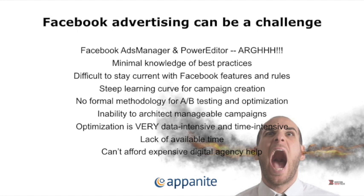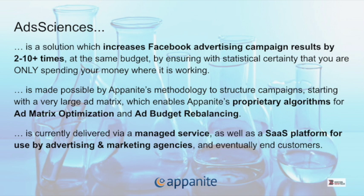In most cases, our approach delivers two to ten times more effectiveness at the same ad spend. Ad Sciences is a solution that increases your ad effectiveness by two to ten times. It's made possible by our methodology, which I'm going to show you in a moment. Basically, we are increasing the size of your ad matrix. That's made possible by the tools we offer — but you're going to live in Excel hell if you try to do that with the tools Facebook gives you. It's currently delivered via a managed service as well as a SaaS platform to ad agencies, and eventually we're going to roll it out to any end customer.